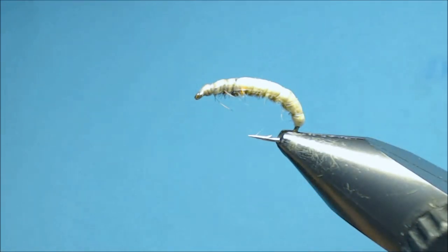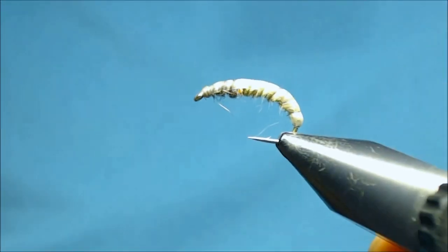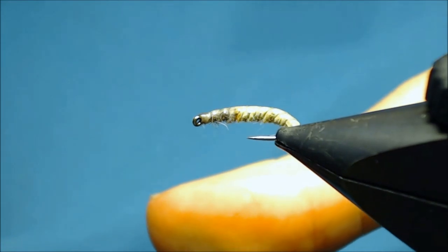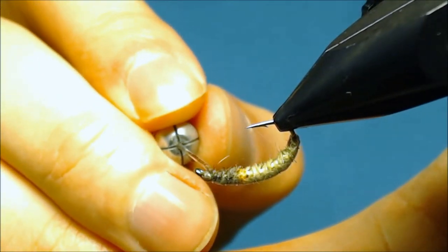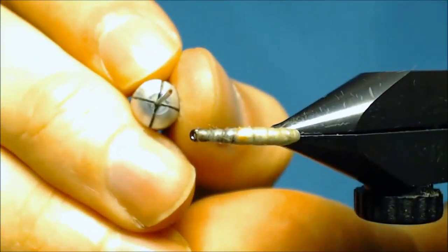And I like to secure the head with some super glue. This will sink down in the thread wraps making it a nice little head. You'll never have to worry of it coming undone. There we go.